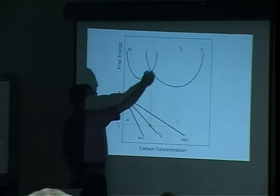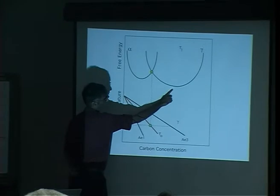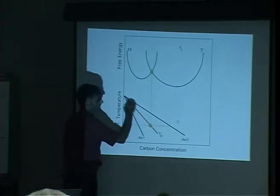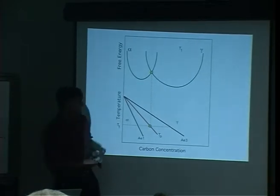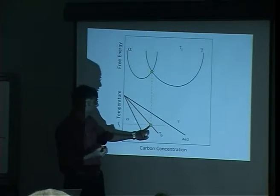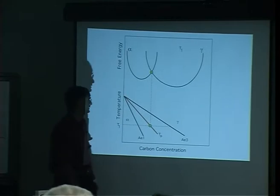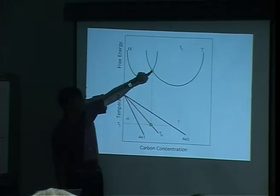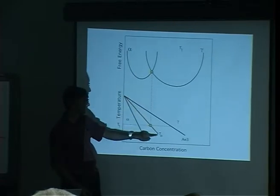Let's do a thought experiment using thermodynamics. This is the free energy surface of alpha ferrite and gamma austenite. Drawing a common tangent gives the equilibrium compositions at temperature T1, which gives the equilibrium phase boundaries on the phase diagram. There is another important point — the T0 curve — which defines the composition where austenite and ferrite have the same free energy for the same chemical composition, and plotting the locus of those points as a function of temperature gives the T0 curve.